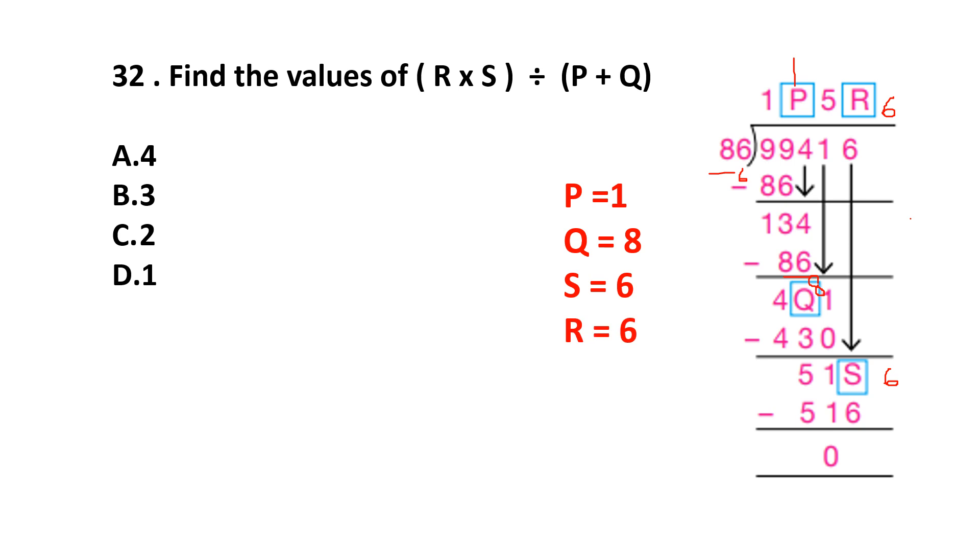Let's solve. R multiplied by S divided by P plus Q. So 6 multiplied by 6 divided by P plus Q is 1 plus 8. 6 times 6 are 36 divided by 9. 8 plus 1 is 9. And 9 times 4 are 36. Our answer is option A, 4. I hope kids you understand this question. It's very easy.